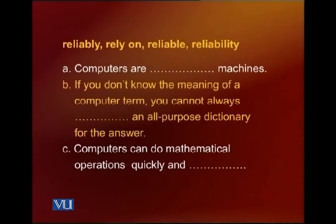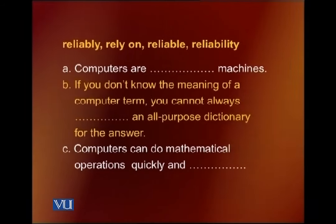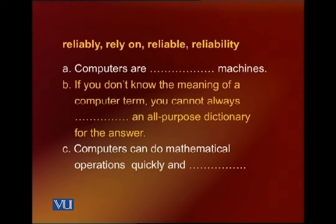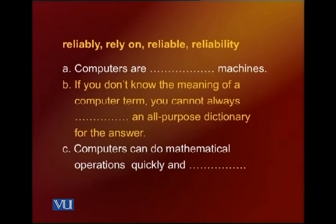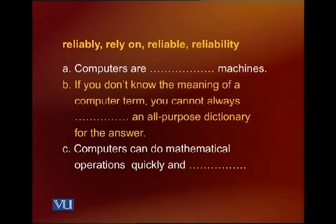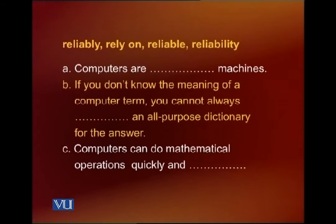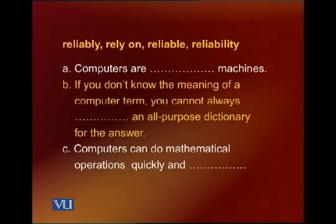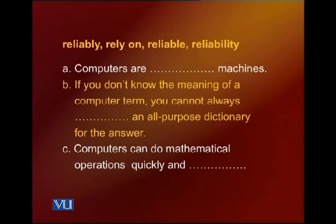The last set comes from the base word 'rely': reliably, reliable, reliability. Sentence A: computers are ___ machines — 'reliable'. Sentence B: if you don't know the meaning of a computer term, you cannot always ___ on an all-purpose dictionary for the answer — 'rely on'. Sentence C: computers can do mathematical operations quickly and ___ — 'reliably', since 'quickly' ends with -ly, the second word will also be an adverb.